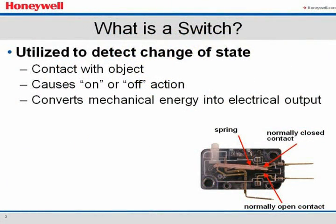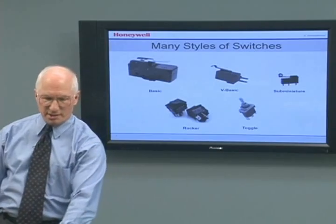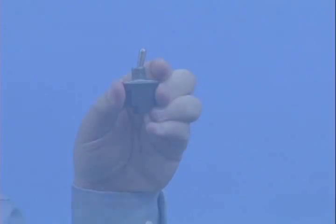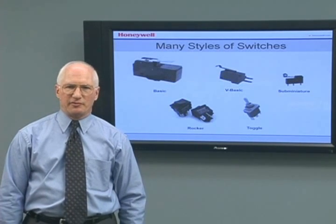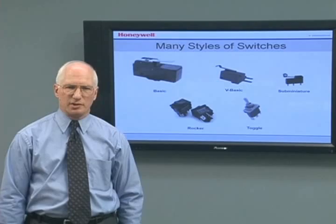What is a switch? A switch is an electromechanical device used in contact applications where the switch is actuated by touching an object or target. The actuation of the switch typically causes an on or off action. Each switch contains a spring and a set of contacts that convert mechanical energy applied to an actuator into an electrical output. Switches come in many styles, such as Basic, Rocker, and Toggle, and also in various shapes and sizes such as Subminiature and V-Basic. To determine the right solution, you'll need to confirm the function the switch will perform. Clearly understanding the difference between switch types, their characteristics, and expected performance is important to your product's success.